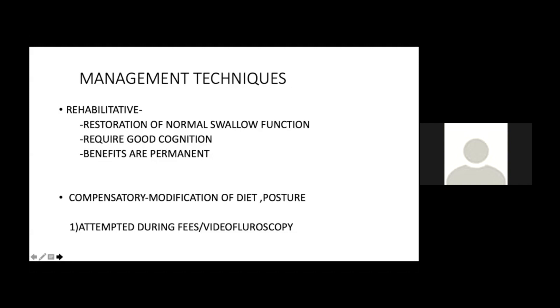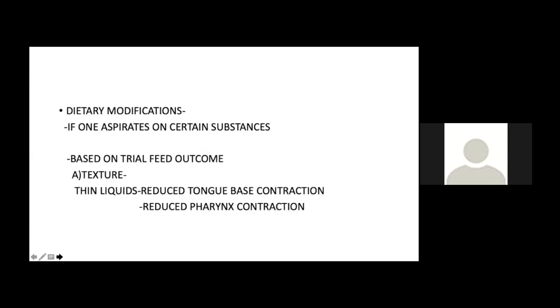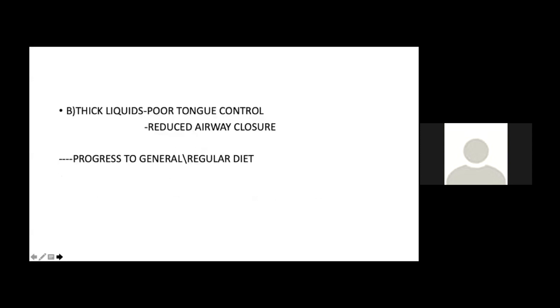Compensatory techniques can provide immediate benefit — for example, tilting the head to the contralateral side in hemiplegia immediately reduces aspiration. Dietary modification: if the patient has decreased tongue base contraction post-RT or reduced pharyngeal contraction, thin liquids are prescribed so gravity aids passage. If the patient has poor trunk control or reduced airway closure, thick liquids are used instead.